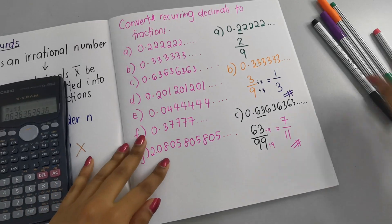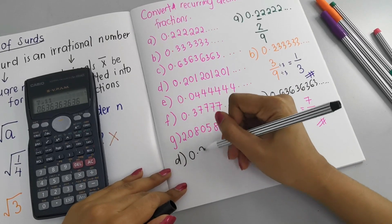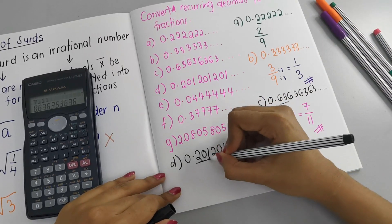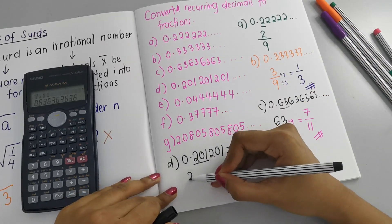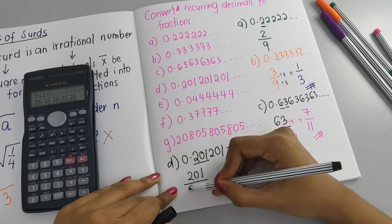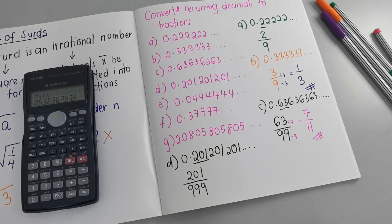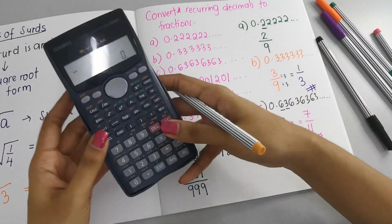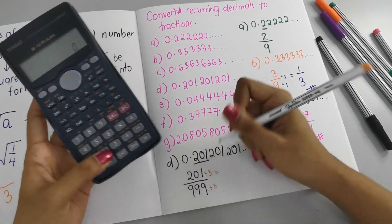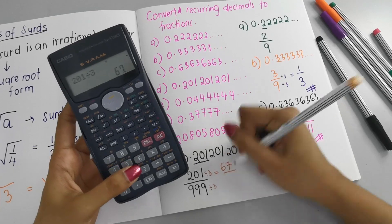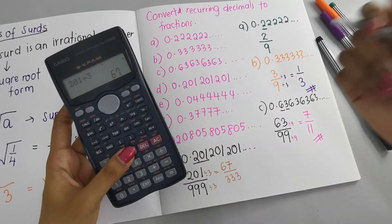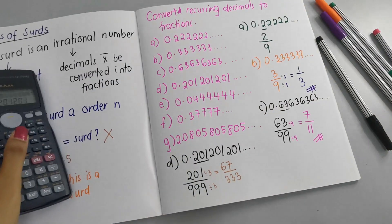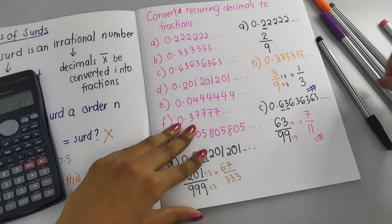For part (d): 0.201201201... — the recurring block is 201, which is three digits. So I write 201 over 999 (three digits up, three 9s down). Can we simplify? Yes — divide both by 3: 201 ÷ 3 = 67, 999 ÷ 3 = 333. So the fraction is 67/333. We can verify the decimal matches.